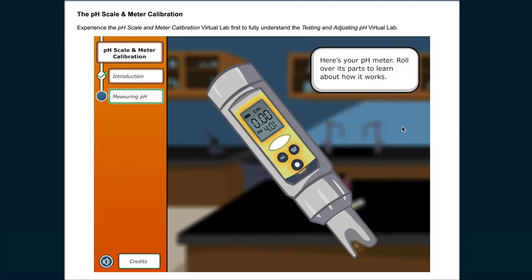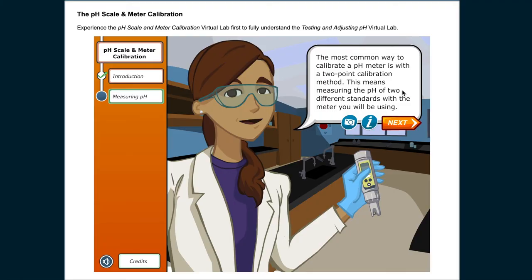Here's your pH meter. The most common way to calibrate a pH meter is with a two-point calibration method. This means measuring the pH of two different standards with the meter you'll be using.